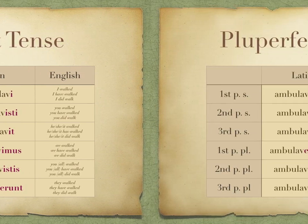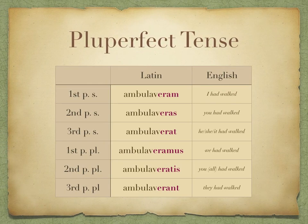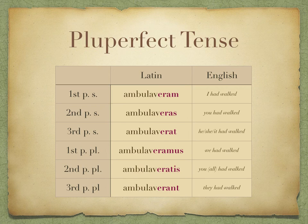Finally, our newest tense, the pluperfect, is quite recognisable because it has -era- in the ending. It has the same stem as the perfect, and you'll recognise the endings as the same as the verb 'to be' in the imperfect: eram-eras-erat, eramus-eratis-erant. These are always translated as 'had'.